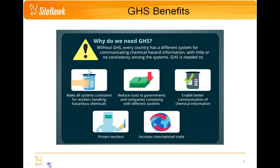So when all systems have adopted GHS and are using consistent methods, we will better be able to communicate chemical information. With better communication comes enhanced protection for those handling hazardous chemicals. Because the messages will be presented consistently regardless of the agency or country, those exposed to hazardous chemicals will be better able to handle, transport, use, and dispose of those chemicals properly — meaning better protection for our workers. And then finally, the last benefit is improved international trade. The unification resulting from a harmonized system will allow those in the chemical world to much more easily cross borders.